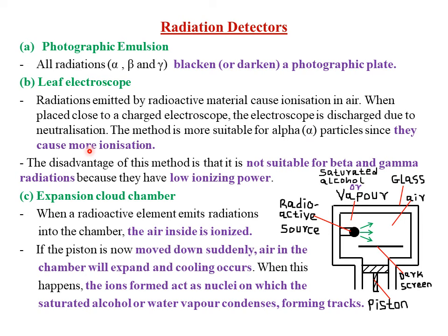The main disadvantage of this method is that it is not suitable for beta and gamma radiations. The reason is because they have low ionizing power. Beta and gamma rays are usually very light and have very low density, therefore they move at a very high speed. Their time of interacting with air molecules in order to ionize them is very little, so they won't be easily detected by a leaf electroscope, which depends on neutralization of its charges to detect a reduction in leaf divergence.